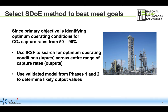We're using the input response space filling design methodology in phase three because our primary objective is to identify optimum operating conditions for capture rates from 50 to 90 percent. We want to search for optimum operating conditions across that entire range of capture rates, making sure we stay focused on that range of output. We don't have to worry about low confidence in our output estimates because we're using a validated model from phases one and two to determine the likely output values, so we can proceed with the input response space filling design methodology with confidence.